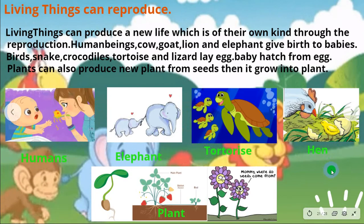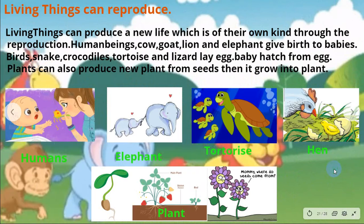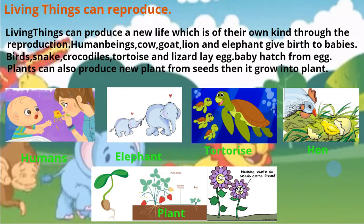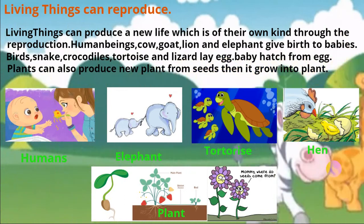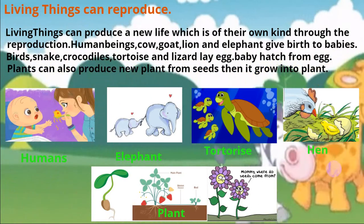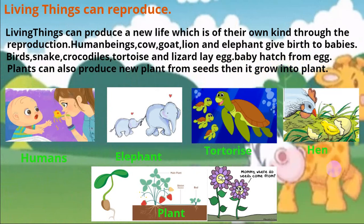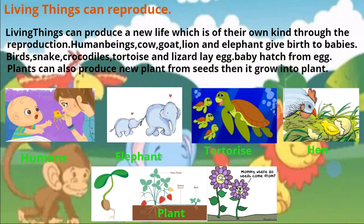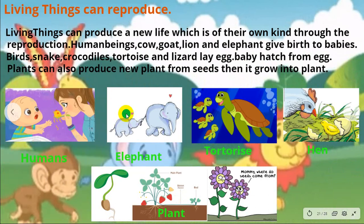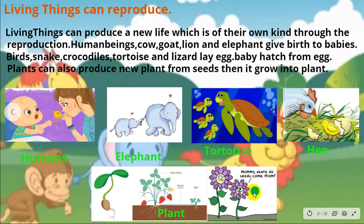Living things can reproduce. Through reproduction, they create a new life of their own kind. Human beings, cows, goats, lions and elephants give birth to babies. Birds, snakes, crocodiles, turtles and lizards lay eggs, and babies hatch from those eggs. Plants can also reproduce new life from seed, which then grows into a new plant.